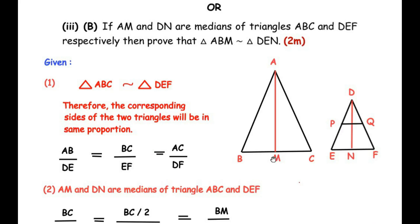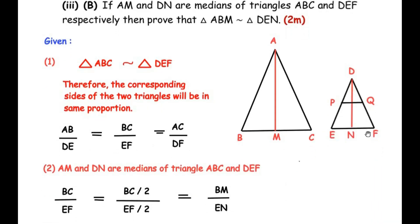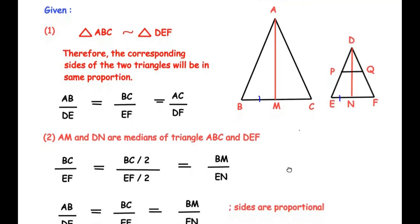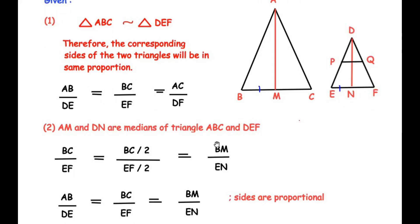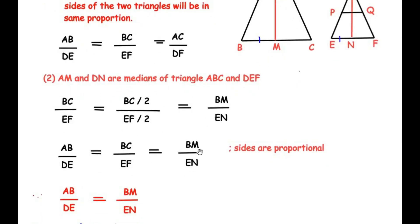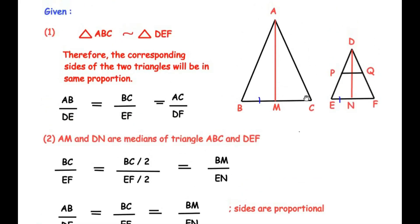Since AM and DN are medians, they bisect the opposite sides. So median AM divides BC into BM equals MC, and median DN divides EF into EN equals NF. Therefore, BC over EF equals (BC/2) over (EF/2), which equals BM over EN. Combining with the earlier proportion, AB over DE equals BC over EF equals BM over EN, so we can directly write AB over DE equals BM over EN.